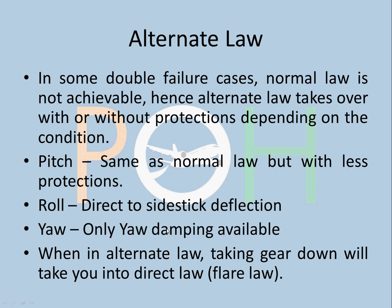In alternate law, only yaw damping is available. Very importantly, when in alternate law, taking the gear down will put you into direct law — this is a very important point frequently asked in interviews and exams. The reason is that when landing you need flare, and to flare you need to be in direct law. Therefore, when flying in alternate law, you would take the gear down as late as possible, closer to the runway.